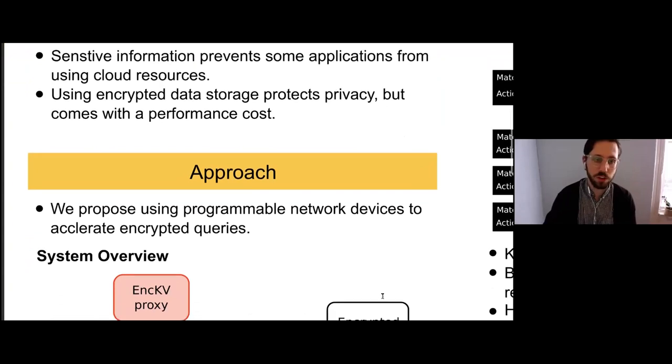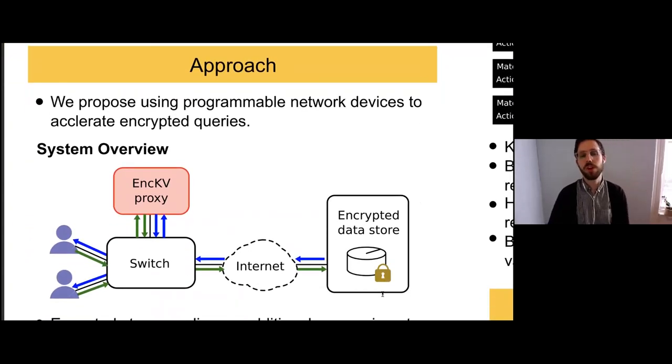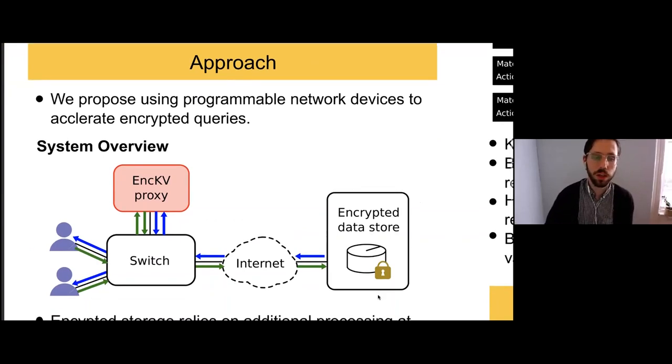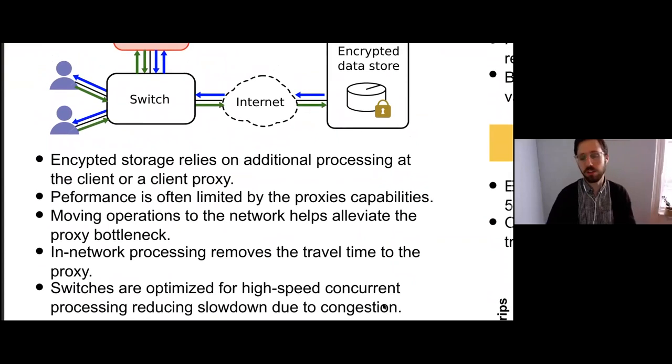What we've tried to do is use programmable network devices to accelerate these queries. They rely on additional processing. Network devices inherently are high throughput, low latency devices, but they have a limited subset of things they can do. By restricting ourselves to what we can do in the network, we can take advantage of throughput and speed benefits and reduce congestion that can occur at these proxies.